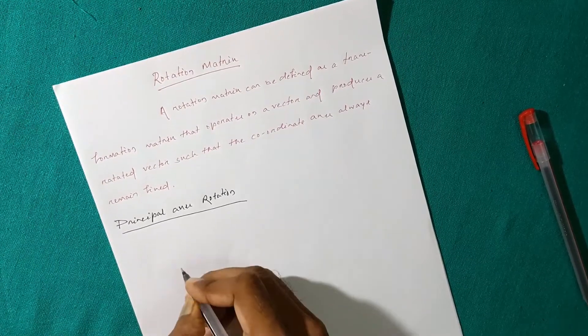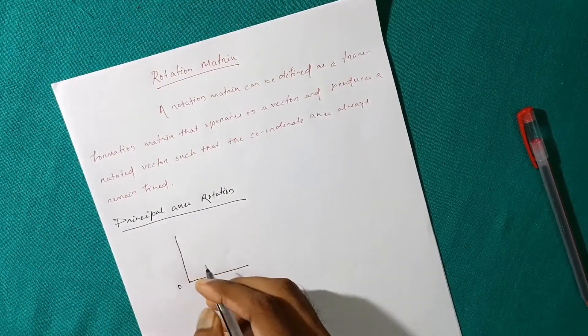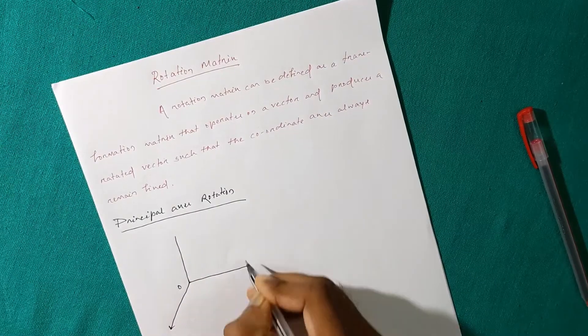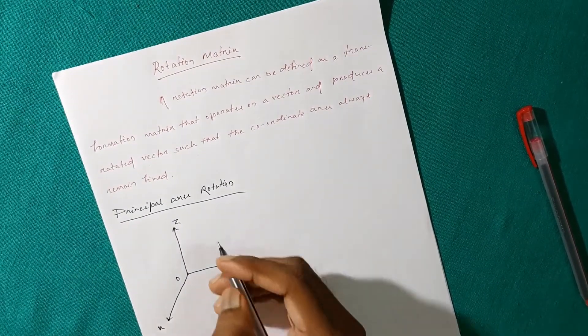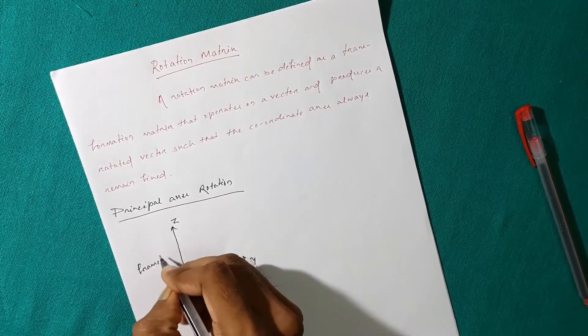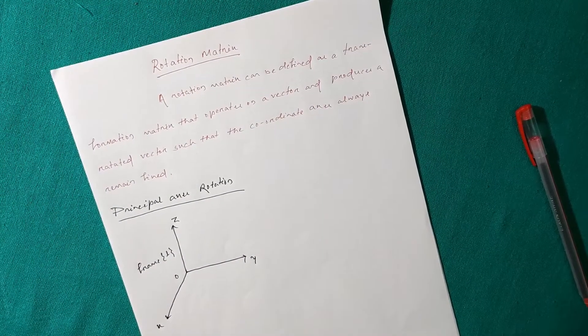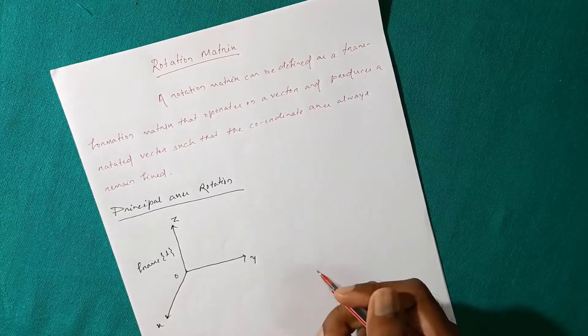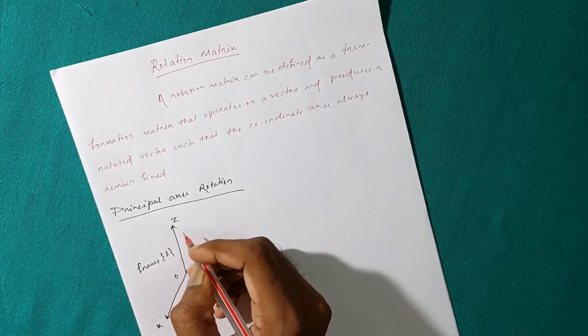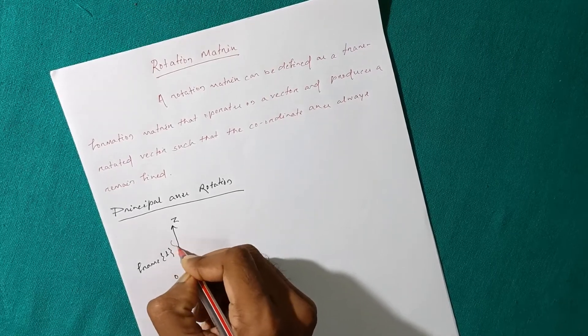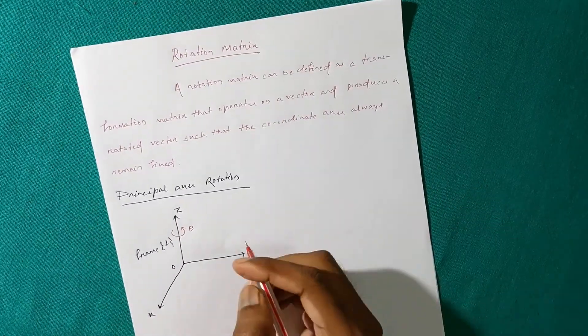Here this is a point O and there are three axes. This is X, this is Y, this is Z. And this frame is let us call as frame 1. So in principle axis rotation, the Z axis remains fixed. We will provide a rotation with an angle theta with the Z axis only.